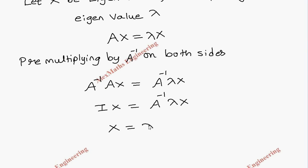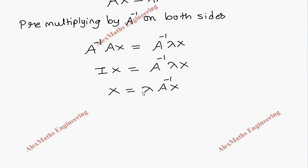Lambda is constant into A inverse X. From this, lambda can be taken to the other side as 1 by lambda into X equal to A inverse into X.